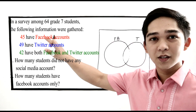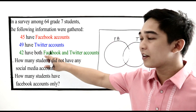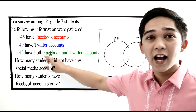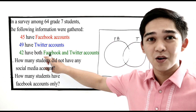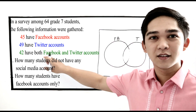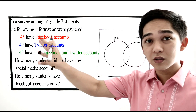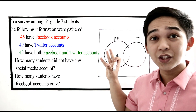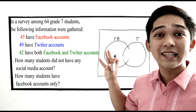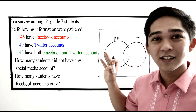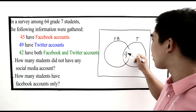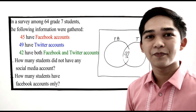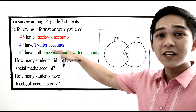Working backward, we start with the last given: 42 have both Facebook and Twitter accounts. So where do we place 42? Since they have both Facebook and Twitter, this clearly belongs at the intersection of the two sets. So we write 42 at the intersection of the two circles.